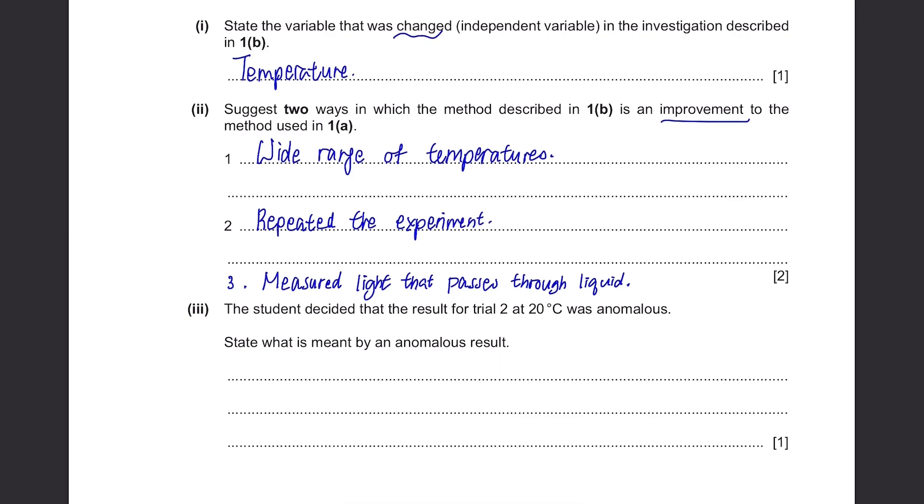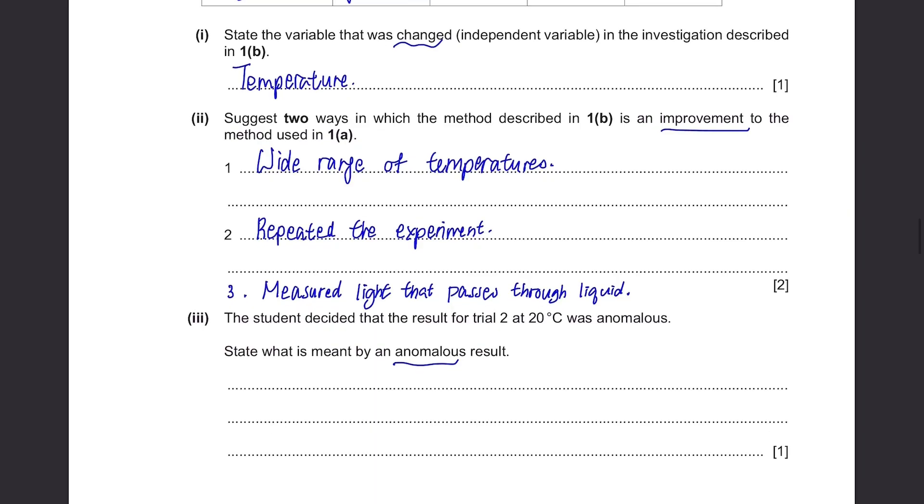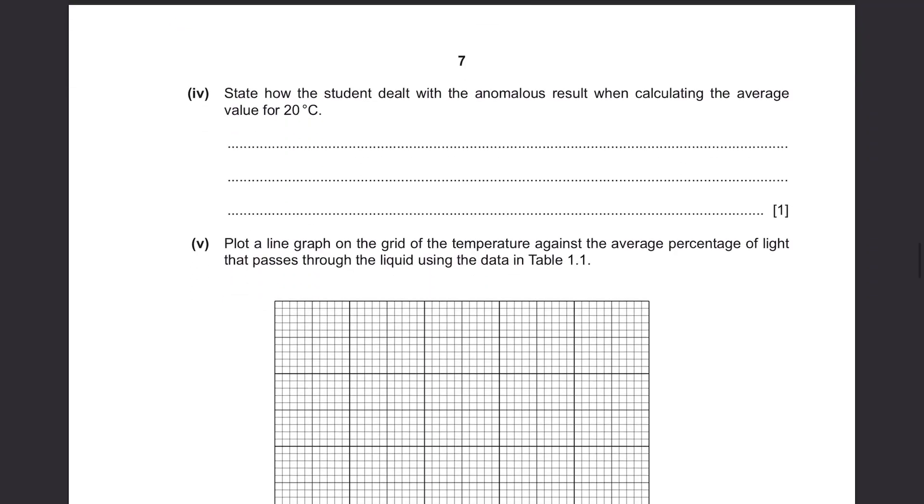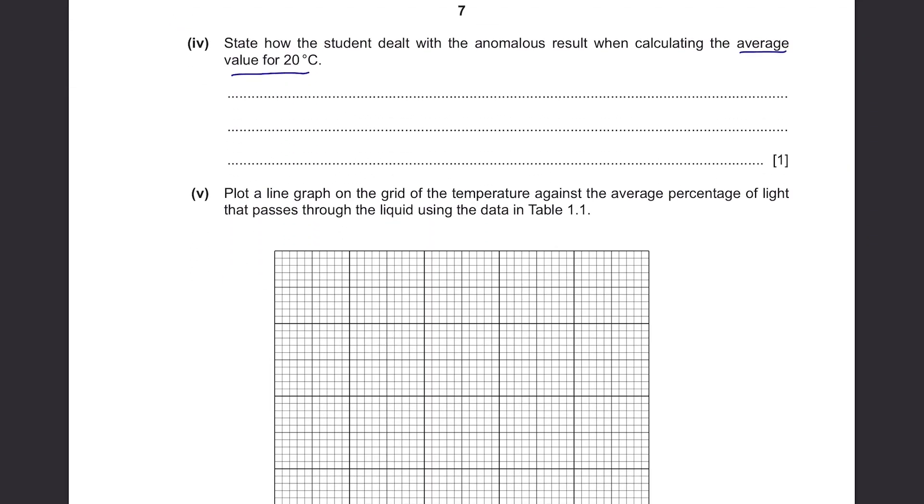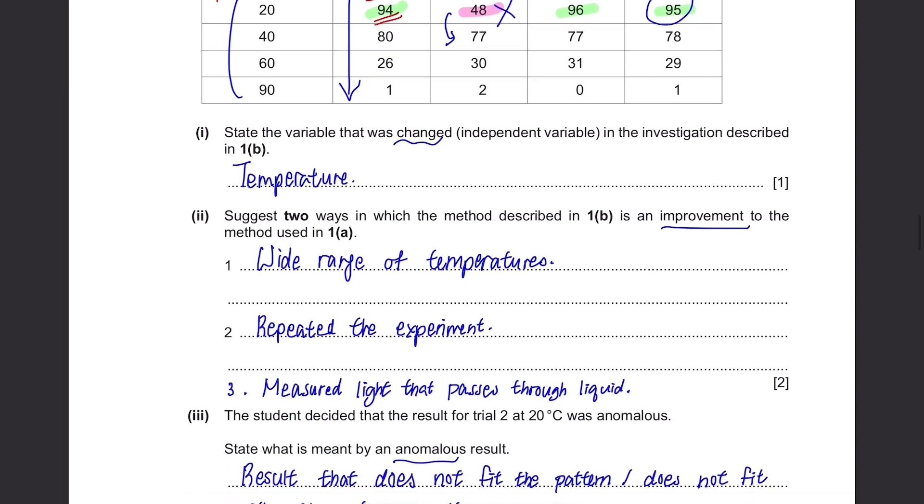The student decided that the result for trial 2 at 20 degrees Celsius was anomalous. Say what is meant by an anomalous result. Trial 2 at 20 degrees, they're talking about this one. Yeah, suddenly became 48 degrees Celsius and then increased back to 77. No, this one definitely stands out. So anomalous results means that the result that does not fit the overall pattern or does not fit with the other results. State how the student dealt with the anomalous result when calculating the average value for 20 degrees Celsius. The average value can be found here, 95. You had 94 and 96, and it's quite obvious that 95 is just an average of trial 1 and 3. So the student has not included the result from trial 2 when calculating the average because it's an anomalous result.